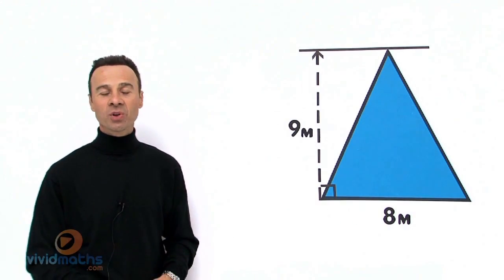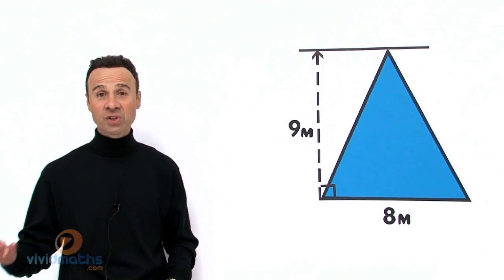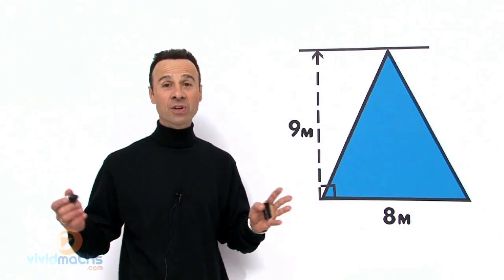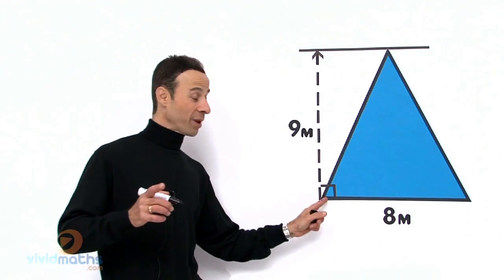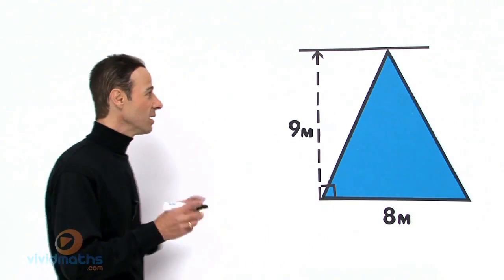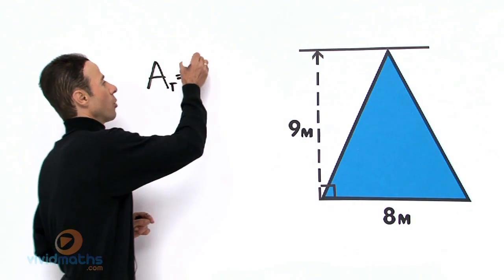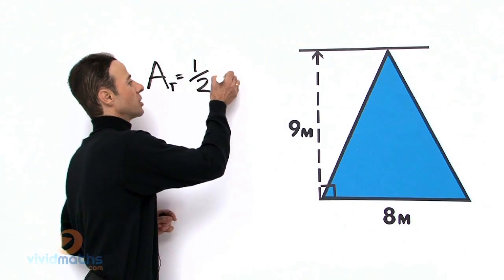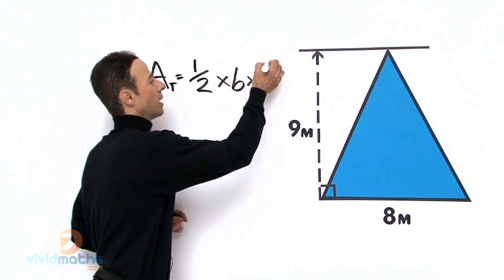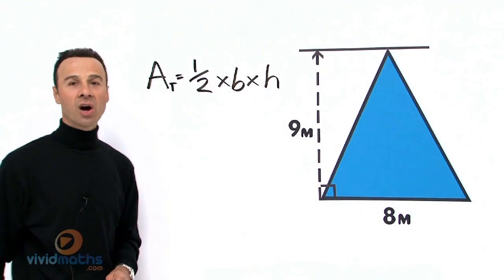And the way we are going to work it out is by using the formula for the area of a triangle. The formula for the area of a triangle where we have the perpendicular height is: area of a triangle equals one half times the base times the perpendicular height.